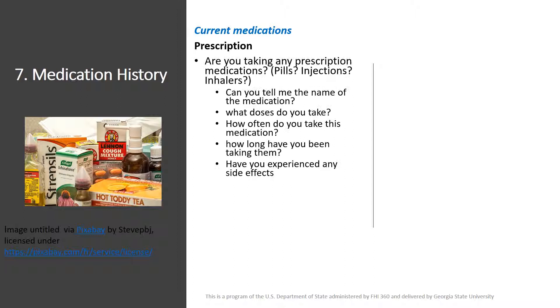After the family history, you now move to the medication history. In this section, you will ask questions about your patient's current medications. First, you will ask about prescription medications with a simple question: are you taking any prescription medications — things like pills, injections, or inhalers — and then listen to the patient.